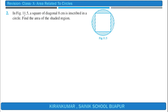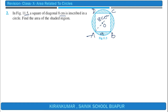Question 2: In figure 11.5, a square of diagonal 8 cm is inscribed in a circle. Find the area of the shaded region. Let me draw the square ABCD inscribed in the circle, where the diagonal equals the diameter.